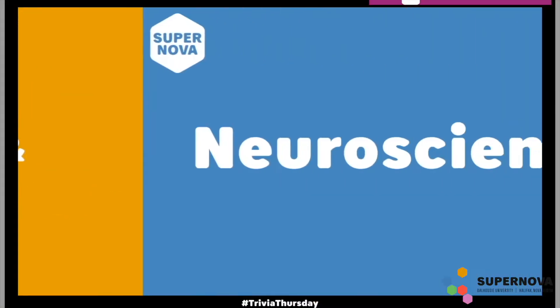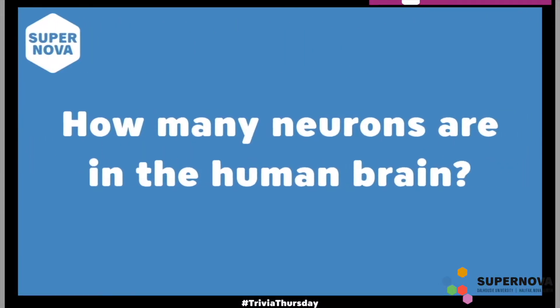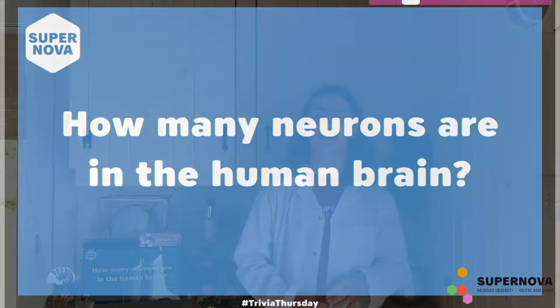Now that we've learned a little bit about earth science, let's move on to our next category, which is neuroscience. Neuroscience is the branch of science that examines the brain and how we can think things. Our neuroscience question says: how many neurons are there in the human brain? Neurons are special cells in our body that are able to pass on messages using electrical signals.